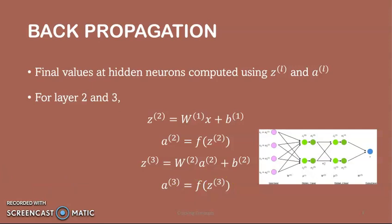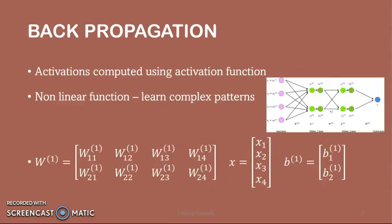The activations are computed using the activation function f, which is non-linear — for example, sigmoid, rectified linear unit, or tanh — and it allows the network to learn complex patterns in data. When examining them carefully, we see that the subscripts are missing. The reason is that we have combined all the parameter values in matrices grouped by layers, which is the standard way of working with neural networks.